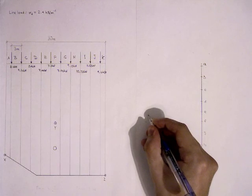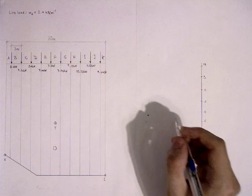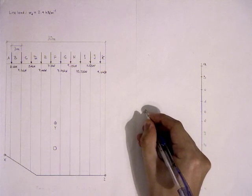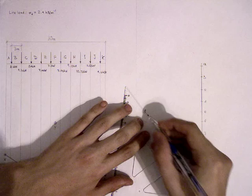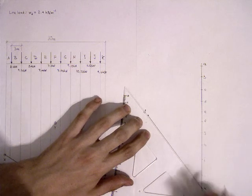Now randomly choose a point on the left side of the loading line. This point will be O trial. Connect the O trial point with all the points on the loading line.